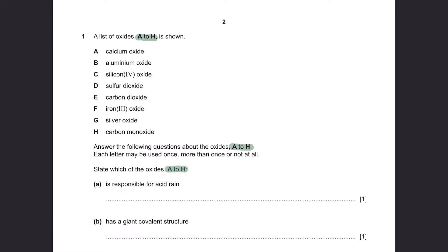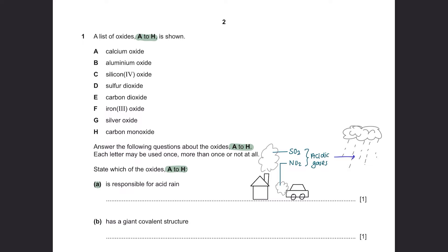Question A: Which oxide is responsible for acid rain? Cars and power stations release nitrogen dioxide and sulfur dioxide, which then dissolve in rain to form acid rain. So the answer for A here would be sulfur dioxide.